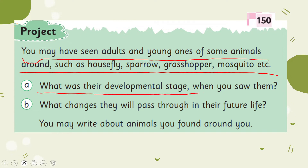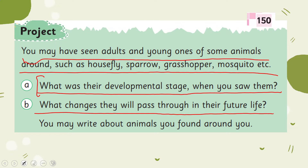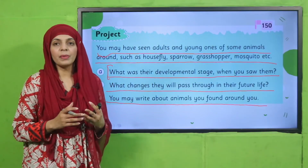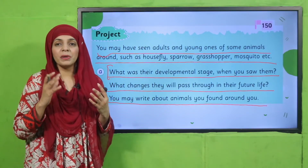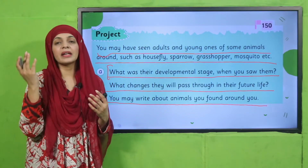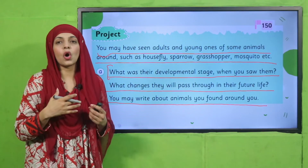In which developmental stage were they when you saw them? Were they fully grown up? Were they little babies? What changes will they pass through in their future life? You may write about animals you find around you — such as cats, dogs, ducks, or hens — and describe their developmental stages.